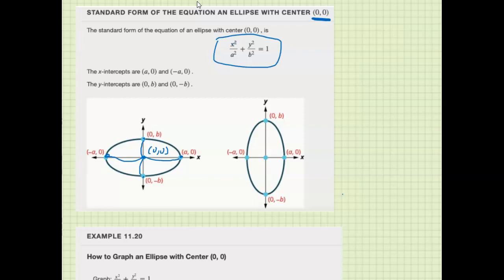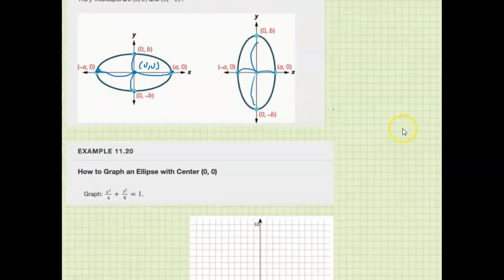So again, that works for both versions. Whether it's flat or tall, a is always how far you go left and right, and b is always how far you go up and down. All right, so let's graph.